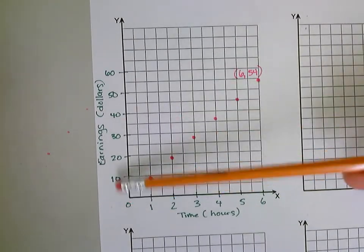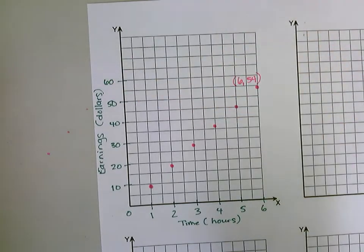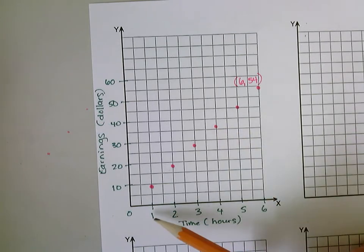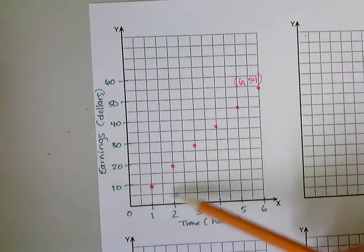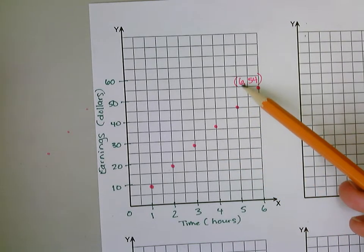Up here I have the earnings in dollars going up the y-axis, and what I did is I plotted some points of one hour and then how many dollars.